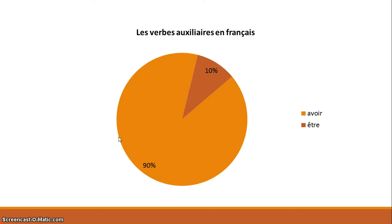But before I do that, I want to show you this pie chart here, which, interestingly enough, in French they don't call it a pie chart — they call it a camembert, the type of cheese. So it's really a cheese chart in French. Anyway, les verbes auxiliaires en français: you see in this camembert chart that the two auxiliary verbs in French are avoir and être, and the lion's share of verbs go to avoir. Only a small percentage go to être.